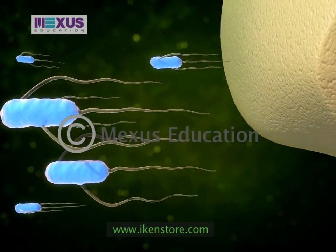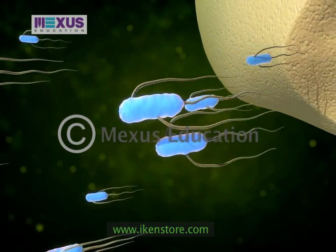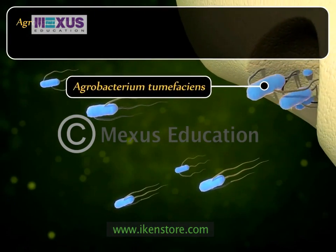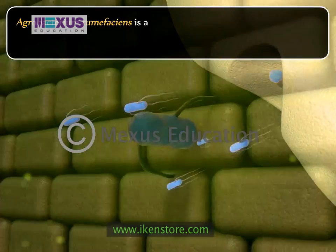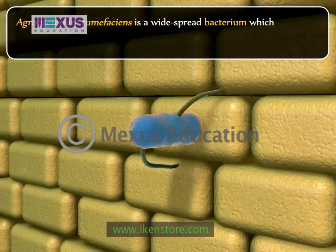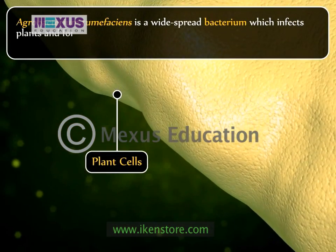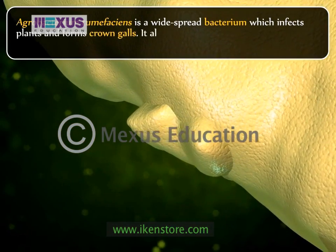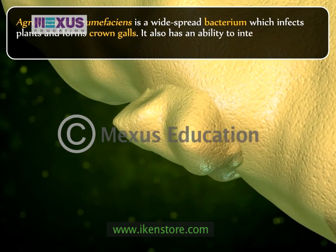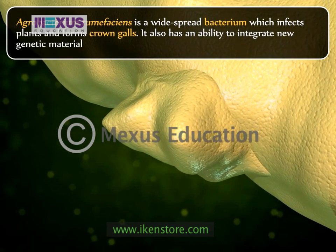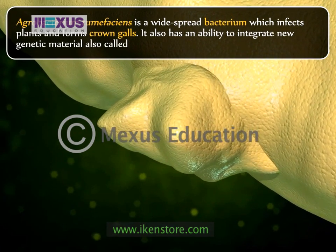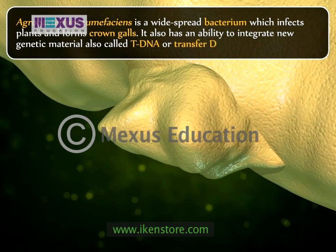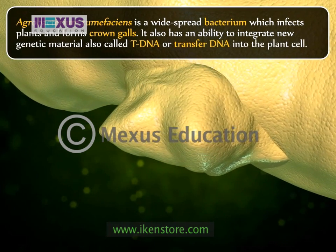The first category is Agrobacterium-mediated transformation. Agrobacterium tumefaciens is a widespread bacterium which infects plants and forms crown galls. It also has an ability to integrate new genetic material, also known as T-DNA or transfer DNA, into the plant cell.